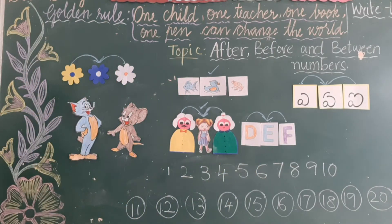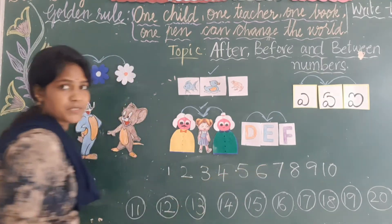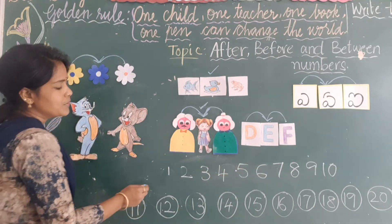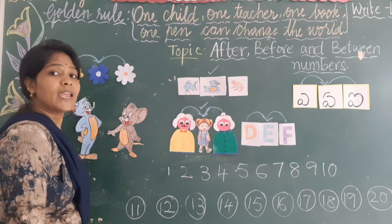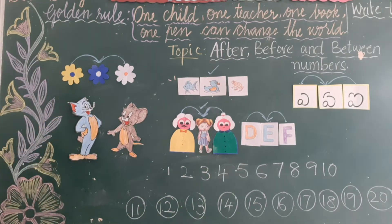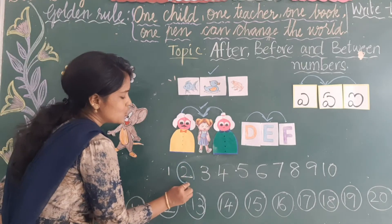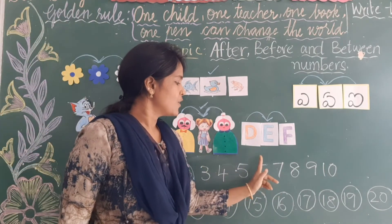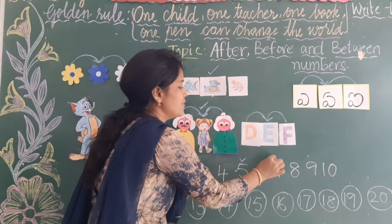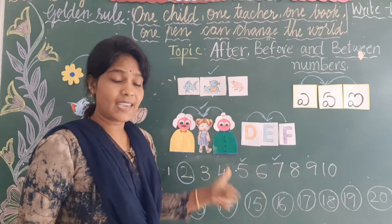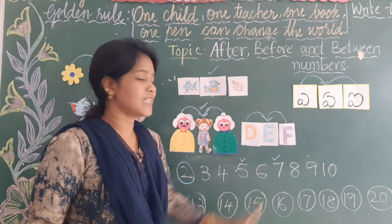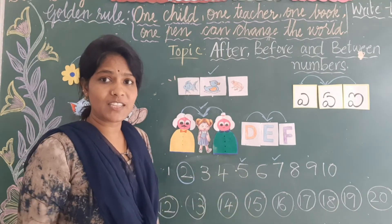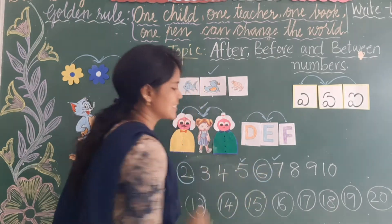Now we have done with before and after numbers. Now we will do between numbers. Here you can see 10 numbers, 1 to 10. Which number is there in between 1 and 3? In between 1 and 3 — yes, 2, right? Now tell me children, which number is there in between 5 and 7? Yes, there is 6 in between 5 and 7.